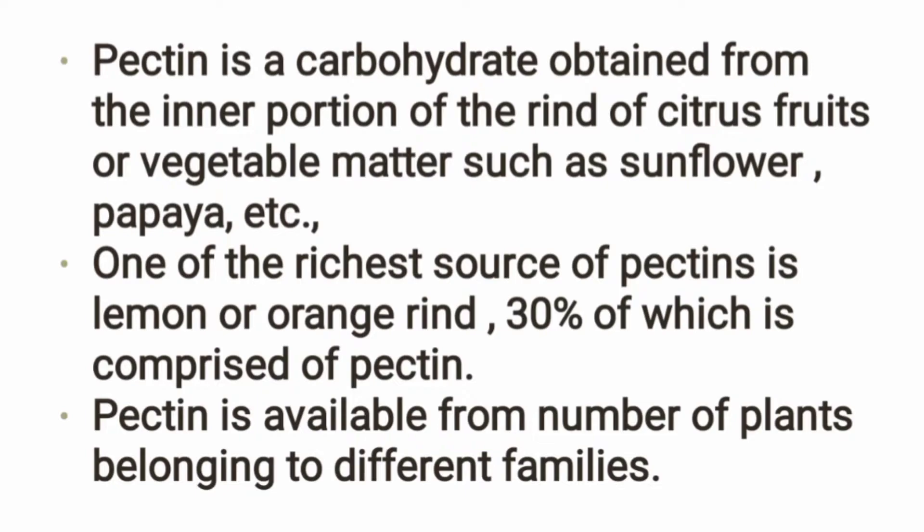Pectin is found in the pith or white portion of fruits — like satukudi, orange, and lemon. Other sources include sunflower and papaya. There is a large amount of pectin in lemon and orange; you can isolate up to 300 grams of pectin from lemon and orange.